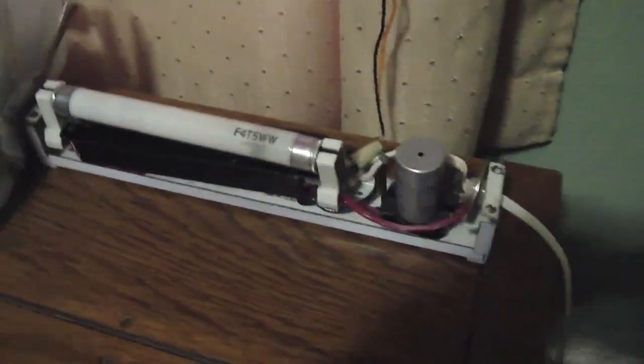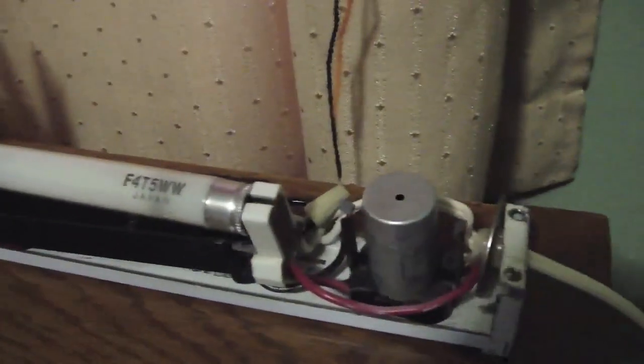Alright, here's my 4 watt Preheat Fluorescent Strip Light. Let's get a really good look at it. Do you notice anything missing? You can see the ballast there and the starter there.